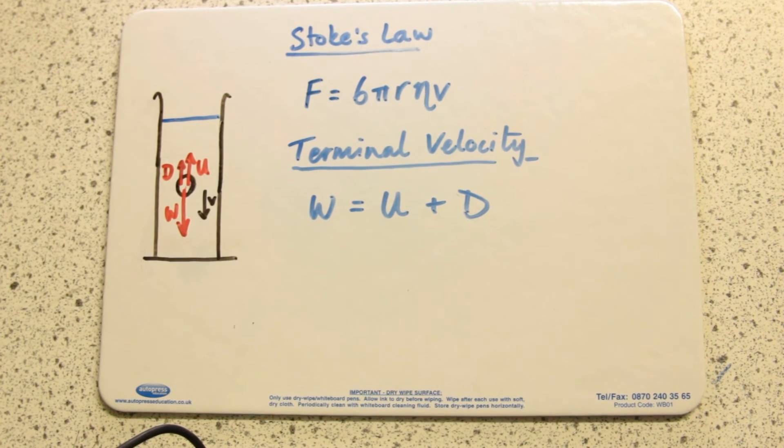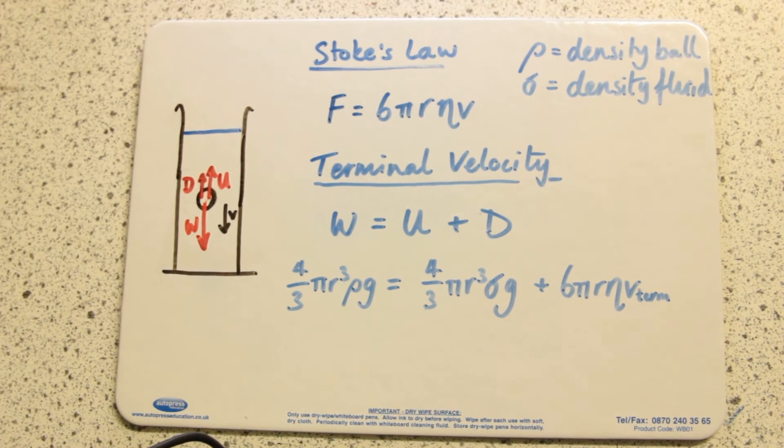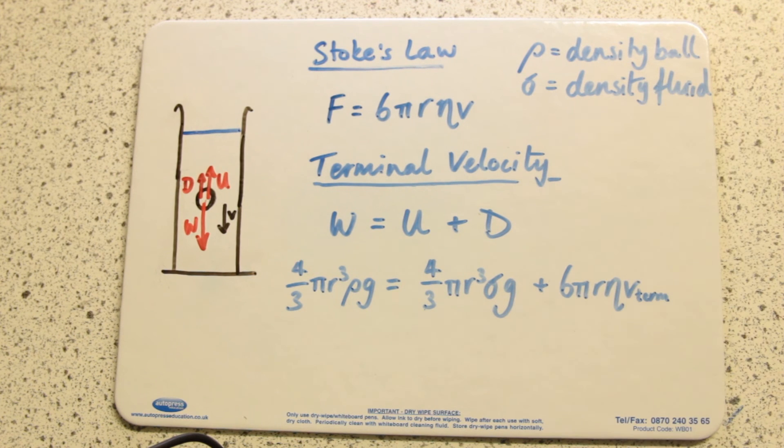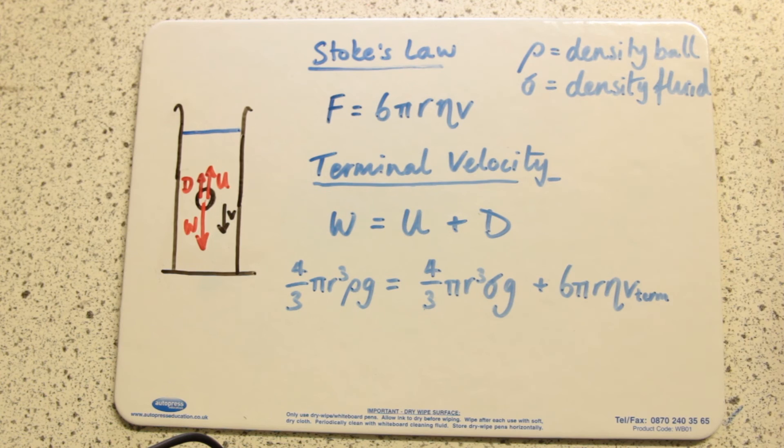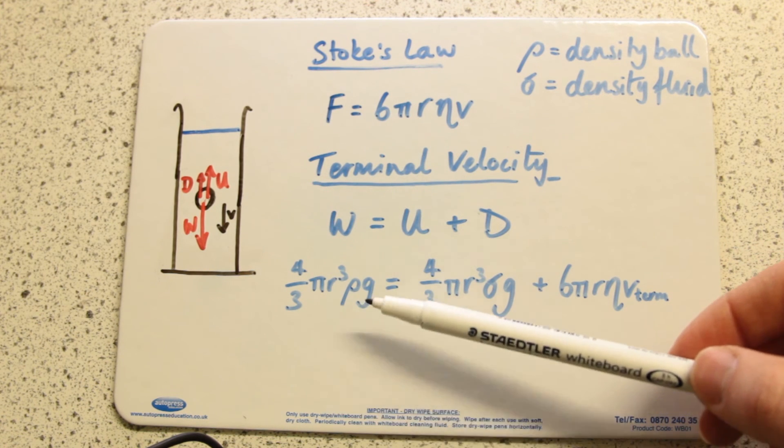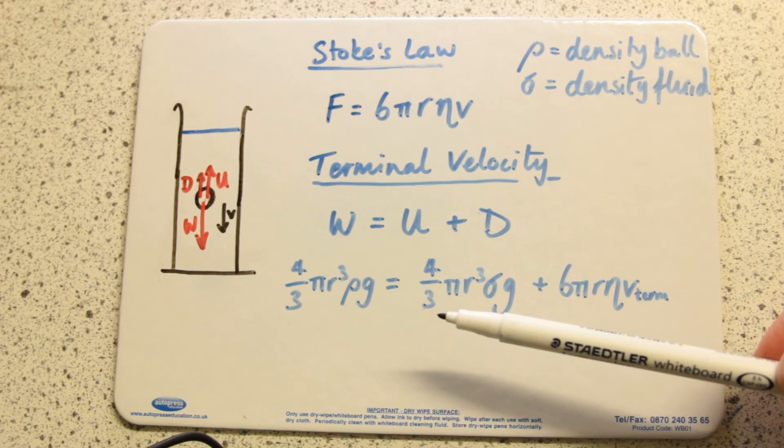We can sub in what we know. I'm going to use ρ as the density of the ball and σ as the density of the fluid. The weight is 4/3 πr³ρg, that's equal to the upthrust which is the weight of fluid displaced, 4/3 πr³σg.